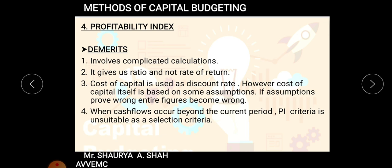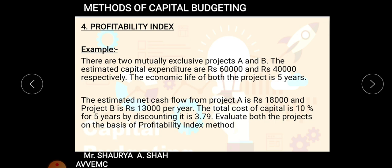Now we will solve an example. There are two mutually exclusive projects A and B — you need to select only one. The estimated capital expenditure is 60,000 for Project A and 40,000 for Project B. The economic life of both projects is five years. The estimated net cash flow from Project A is 18,000 total and from Project B is 13,000 total — these are uniform annual cash flows.